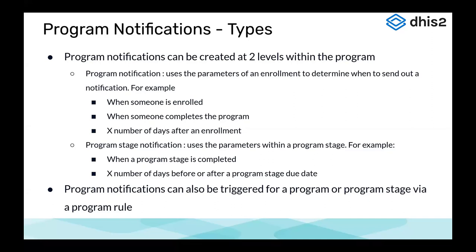There are two different types of program notifications, created at two different levels within the program. A program notification uses the parameters of an enrollment to determine when to send — for example, when someone is first enrolled, when someone completes the program, or a set number of days after enrollment to remind a client, care provider, or manager that the enrollment has occurred.